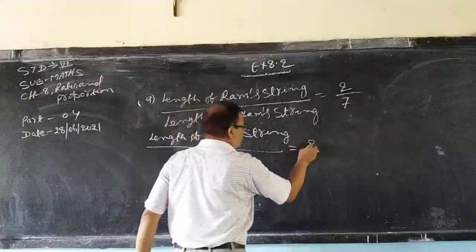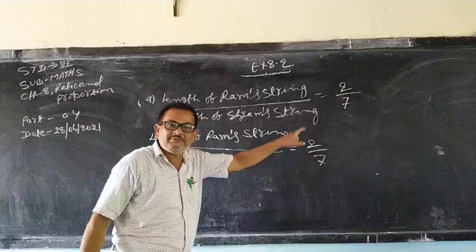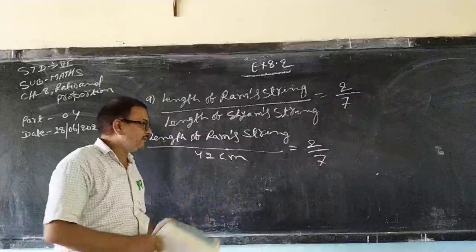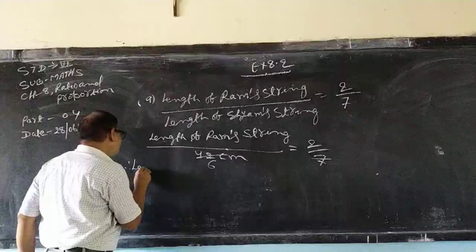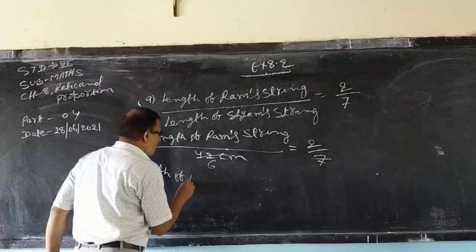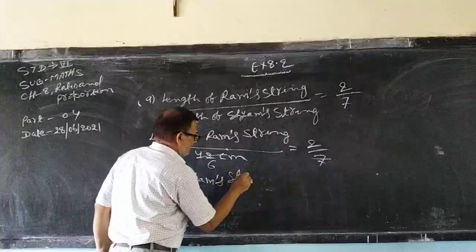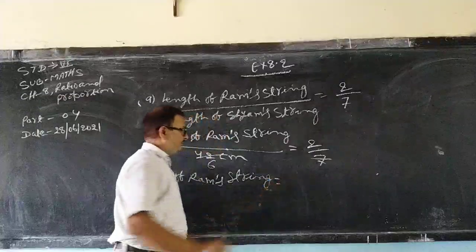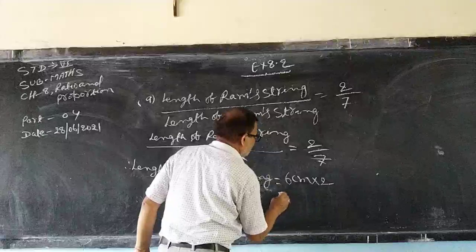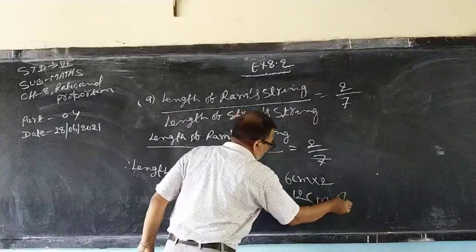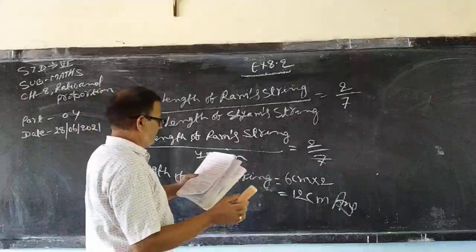Is equal to 2 by 7. See this one, and this is in consequence. So consequence you can divide, 6 will come. Length of Gram's string, that means you can write 6 cm into 2 that is equal to 12 cm. This is your answer.